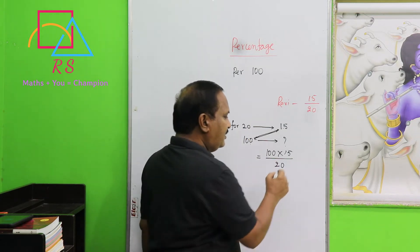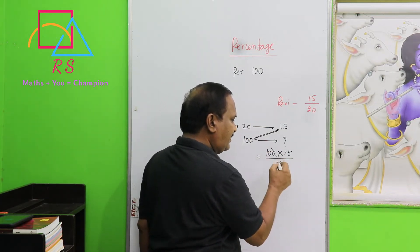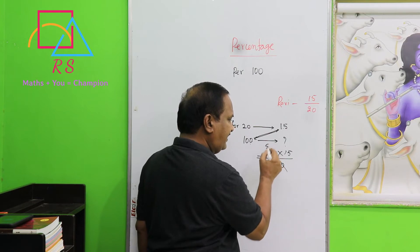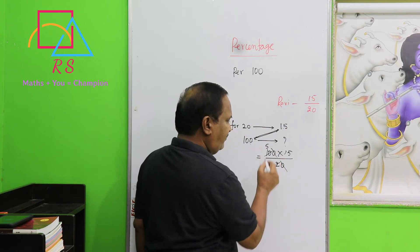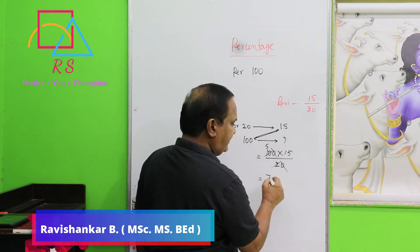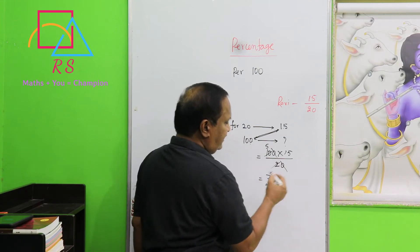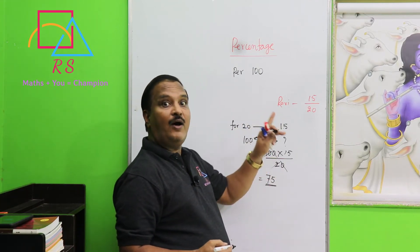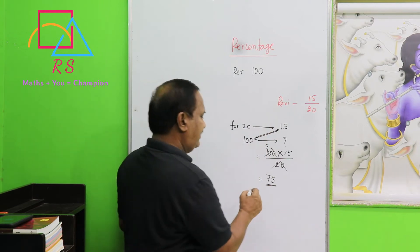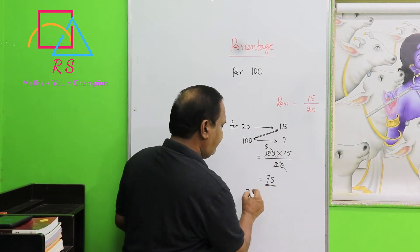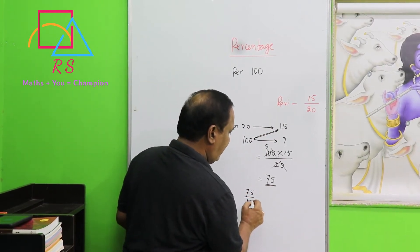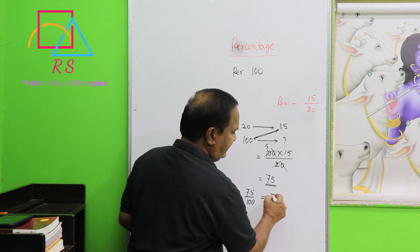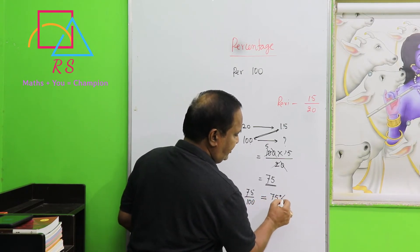So cross multiply: 100 × 15 divided by 20. The zeros cancel, the 2 goes into 10 five times, and 5 × 15 = 75. So Ravi gets 75 out of 100 — that means 75 percent.